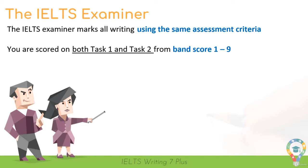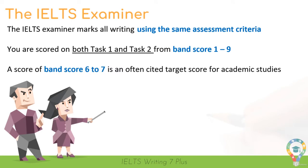The often cited target score is from band 6 or 7 upwards, and this is often what is required to get into universities abroad or to gain employment. Throughout this lesson, we'll look more closely at the IELTS examiner's band descriptors, because if we understand what they are looking for, it's easier to include it in our writing. Throughout the course I will be referencing the band descriptors in lessons to give you a better idea of why we are focusing on certain writing skills.